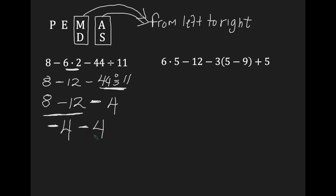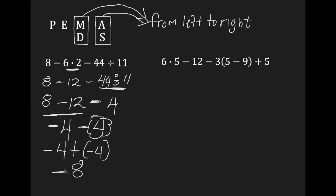And then we're going to subtract 4. So: negative 4 take away 4. Remember, when you're subtracting integers, it's like you're adding the opposite of the second number. So this is actually negative 4 plus negative 4 (the opposite of positive 4 is negative 4). When the signs are the same, you add your numbers: 4 plus 4 is 8, and you keep the sign — so your answer is negative 8.